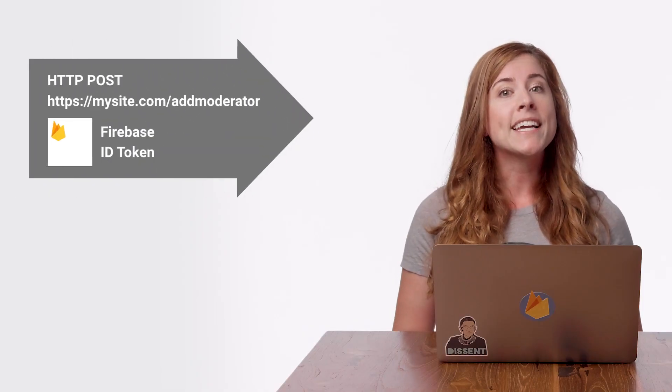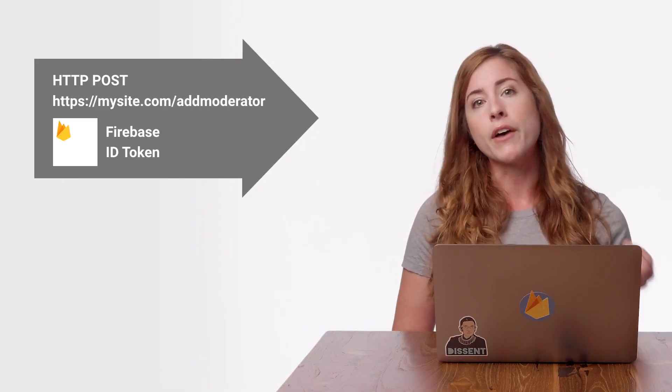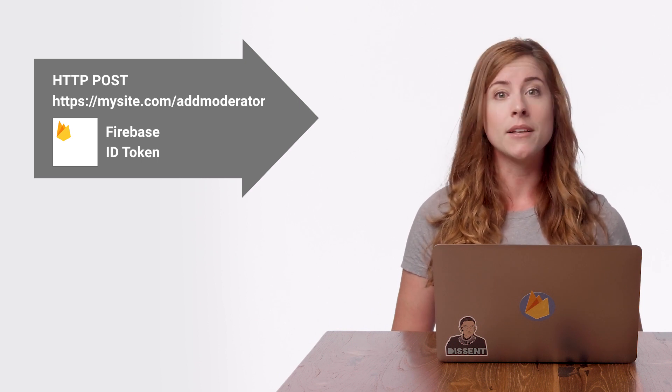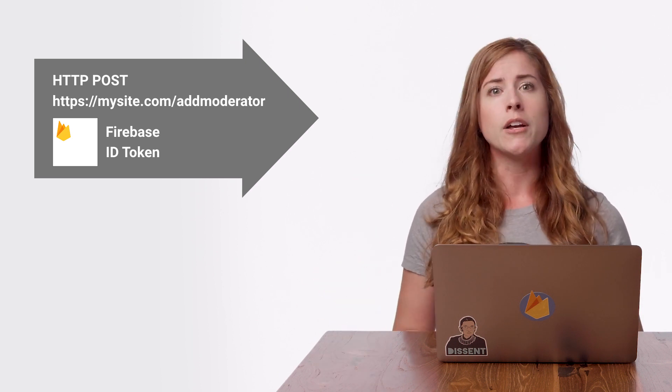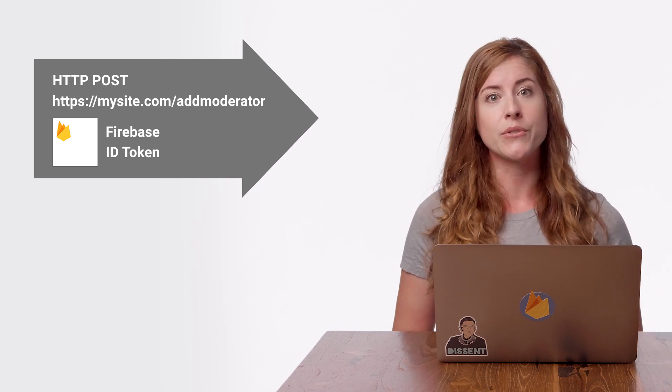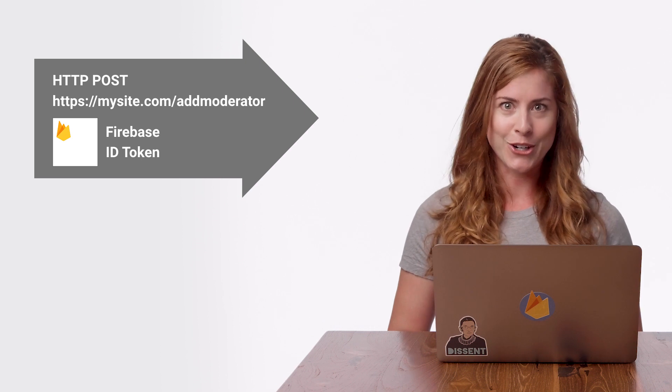Now, I just showed you how to use the Admin SDK to add custom claims. You can then make a call from the client to the server to add the claims as needed. But there's an important piece missing from the code I just showed you. I need a way to ensure that only authorized users can add claims to other users. One way I can do this is by passing along the Firebase ID token of the user making the request, and then server side — be it on a Cloud Function or whatever protected environment I'm using — I can check to see if the user is authorized to promote other users. Let's add that check to our server code.